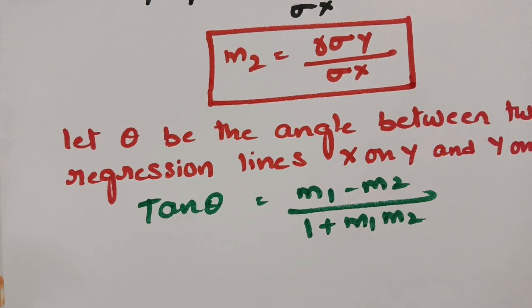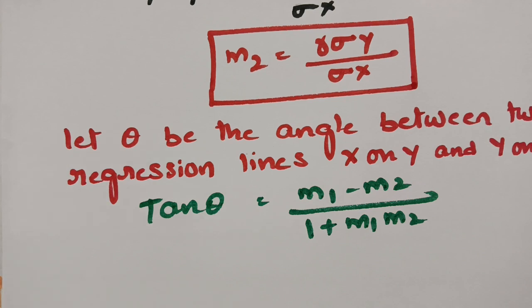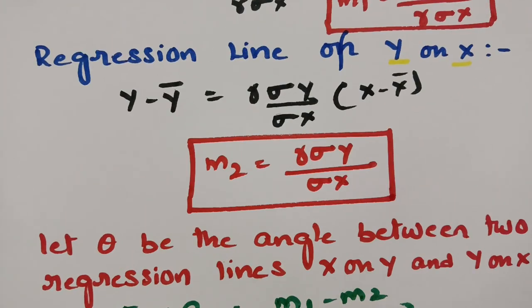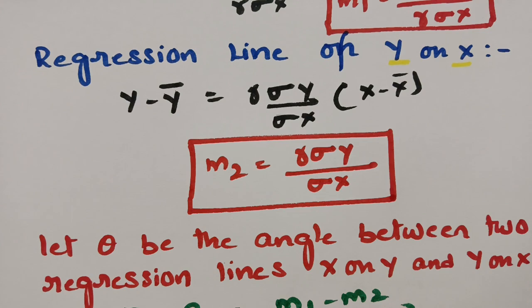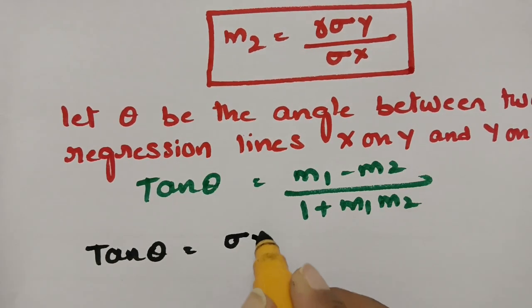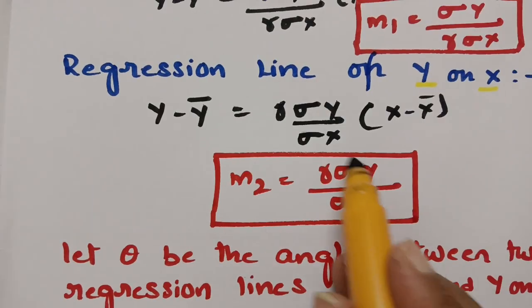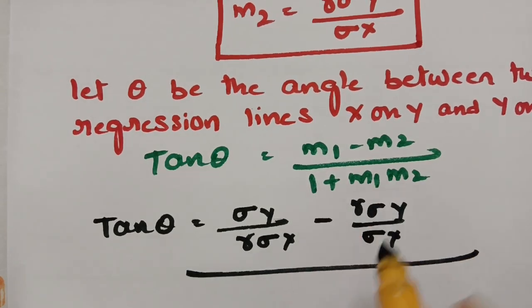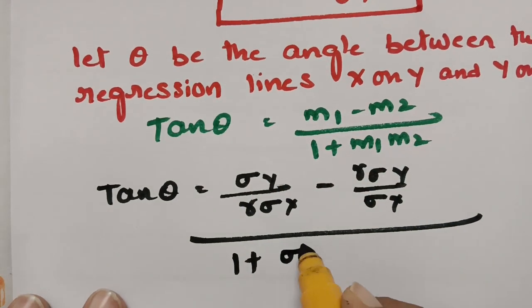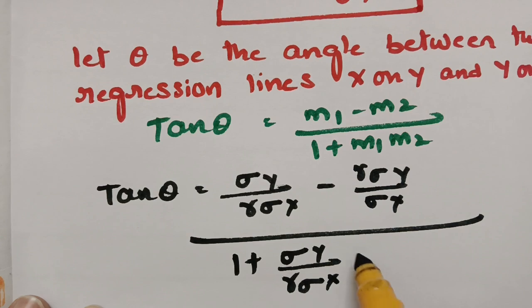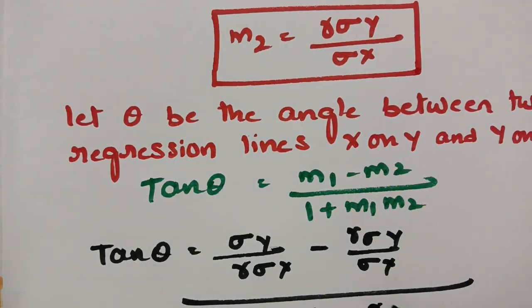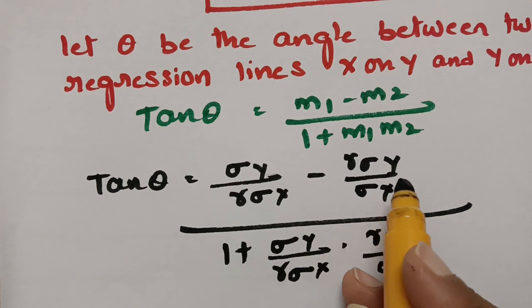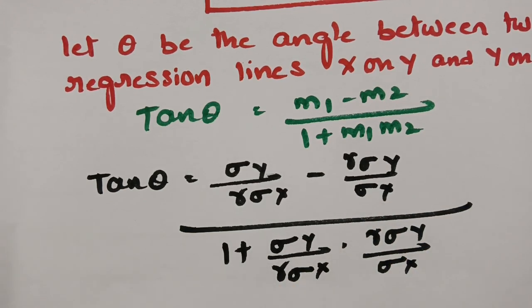Now I am going to substitute m₁ and m₂. tan θ = [sigma y / (r · sigma x) − r · sigma y / sigma x] divided by [1 + (sigma y / (r · sigma x)) · (r · sigma y / sigma x)]. This is m₁ minus m₂ divided by 1 plus m₁·m₂. We can clearly cancel one factor of r.